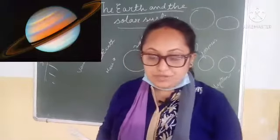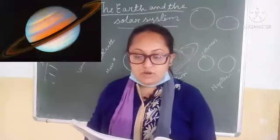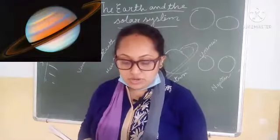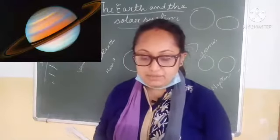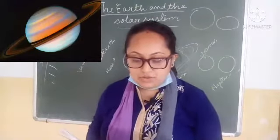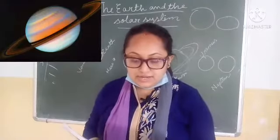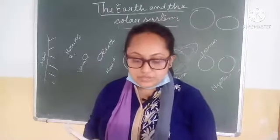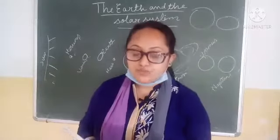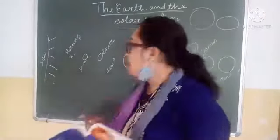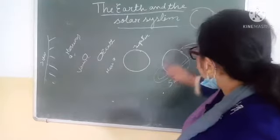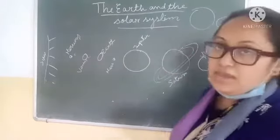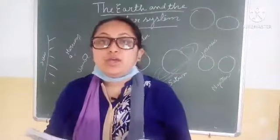Next is Saturn. Saturn is named after Jupiter's father in Roman mythology. It is the most beautiful planet in the solar system. It has bright rings made of icy particles around its equator. According to NASA, Saturn has 53 known moons.